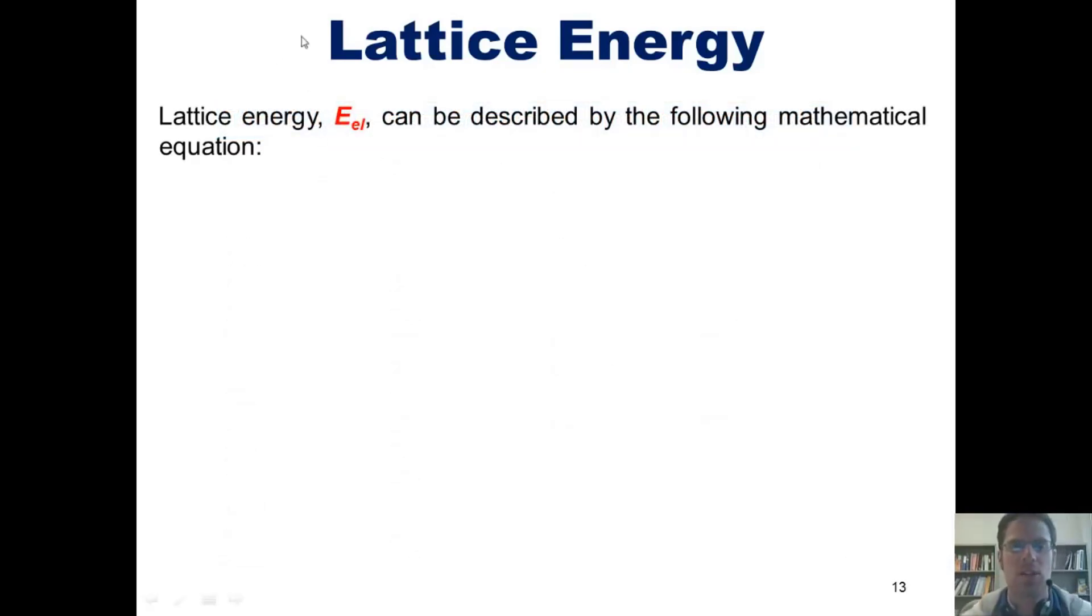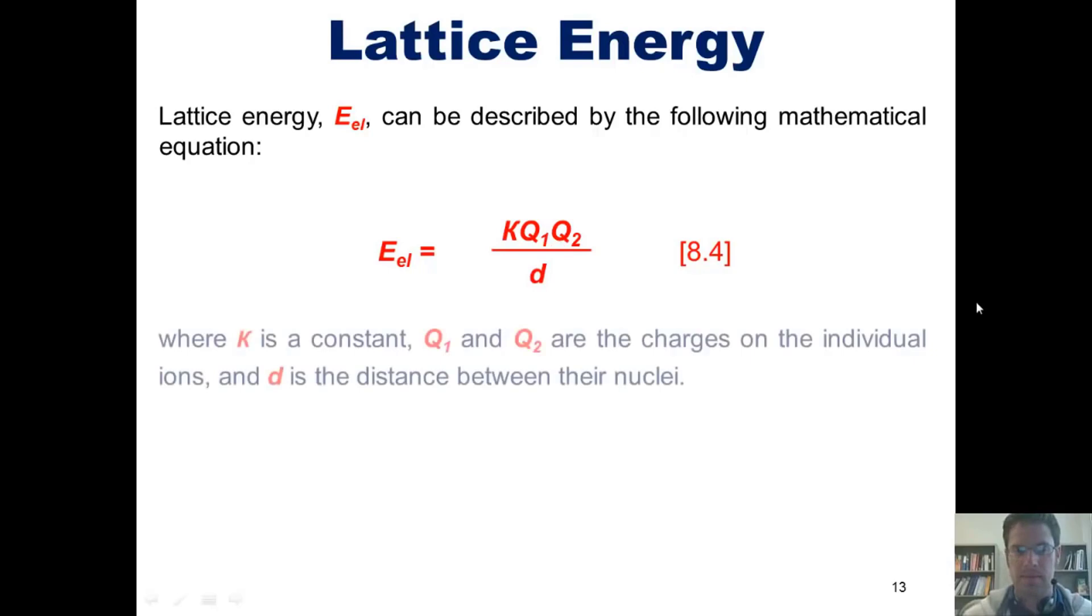Lattice energy, which is also called in our book E sub EL, can be described using the following mathematical equation. E sub EL equals kappa times Q1, Q2 divided by d, where kappa is some constant. And Q1 and Q2 are the individual charges of the individual ions, the cation and the anion. And d is the distance between their nuclei.